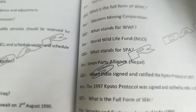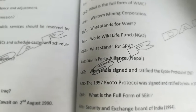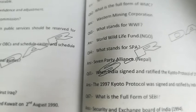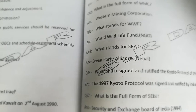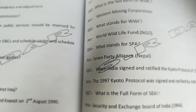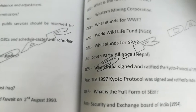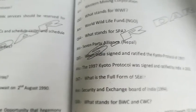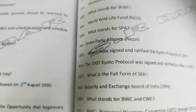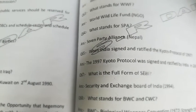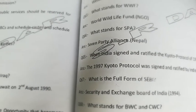What does SPA stand for? SPA stands for Seven Party Alliance. When did India sign and ratify the Kyoto Protocol of 1997?